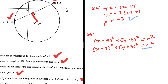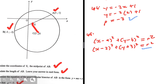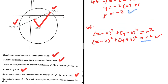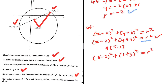So how can we find R squared? We can substitute point A, since A is on the circumference of the circle. Substituting A gives us (5 minus 2) squared plus (1 plus 3) squared equals R squared. So we have 3 squared plus 4 squared, which is 9 plus 16, giving us 25 equals R squared.